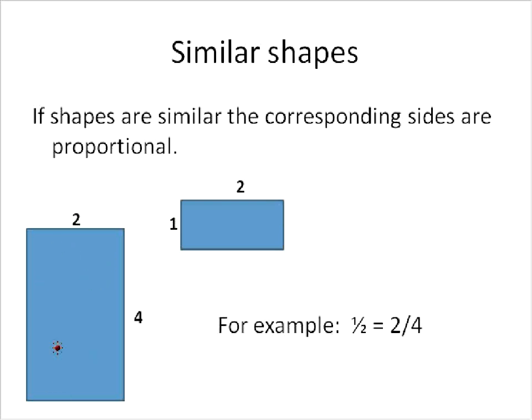So this is a larger rectangle and I said the lengths were 2 and 4. And then this would be a smaller rectangle with the lengths 1 and 2. Clearly this is not to scale, but that's not the point. The point is that these are called similar shapes, and they're similar when the corresponding sides are proportional.